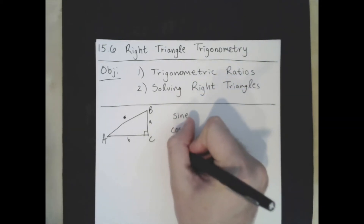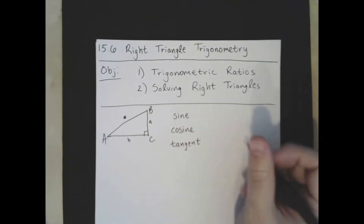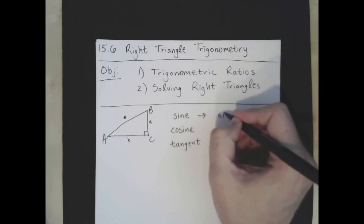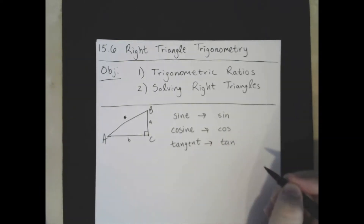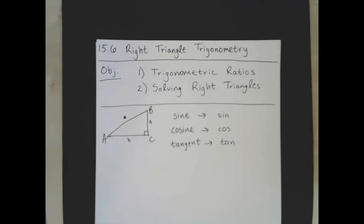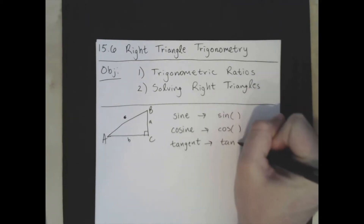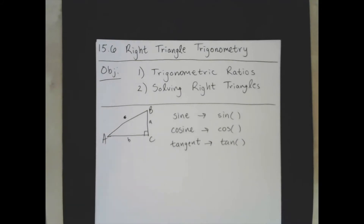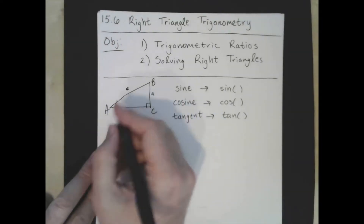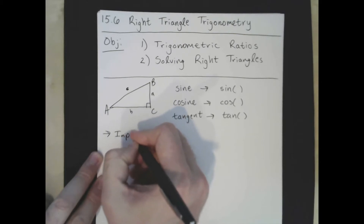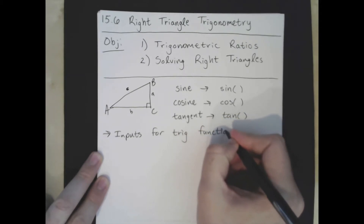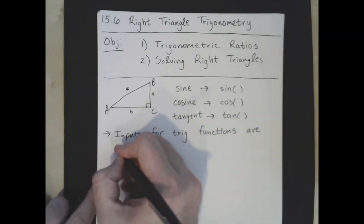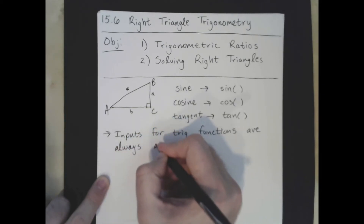Sine gets shortened to sin, cosine gets shortened to cos, and tangent gets shortened to tan. Each of these is a function with an argument in it — just like f of x or g of x, we have sine of something, cosine of something, tangent of something. The special thing about trig functions is that the inputs are always angles or angle measures.